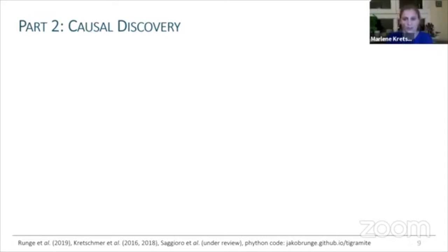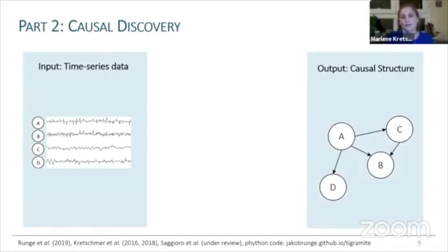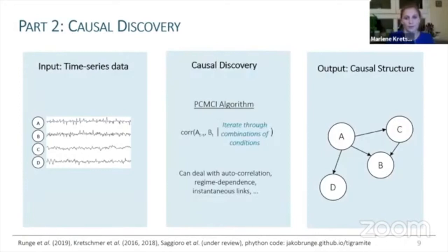In the second part, I will briefly talk about causal discovery. A typical criticism of causal inference is that it requires a causal model — but what if we don't have one? This task is called causal discovery. As input we have time series representing different processes, and the goal is to find or learn the causal structure among these processes.